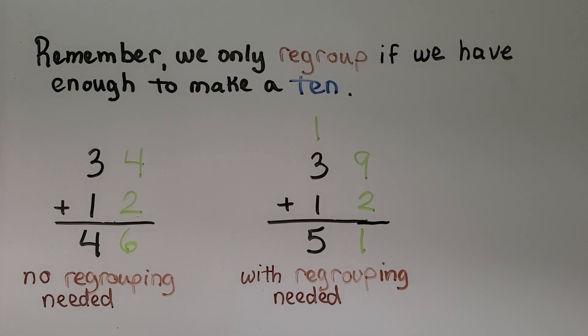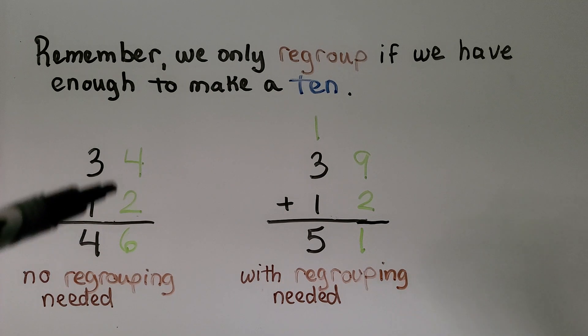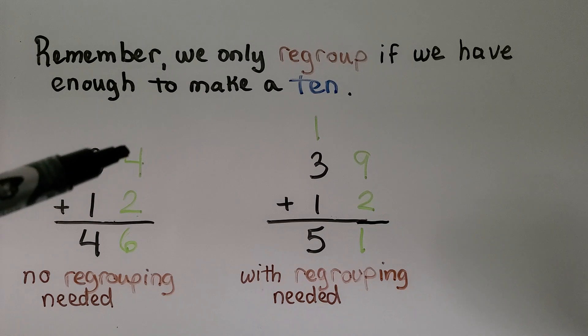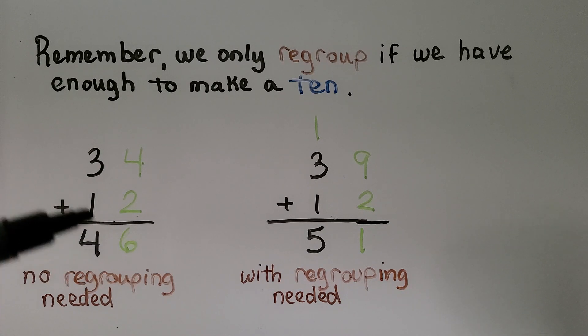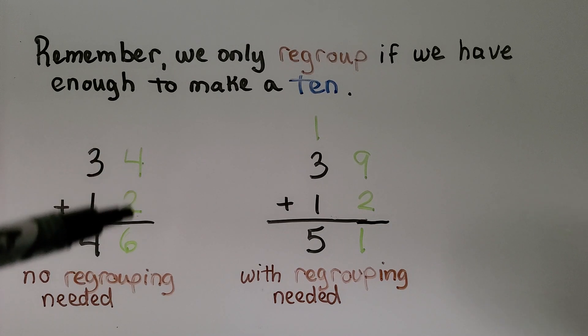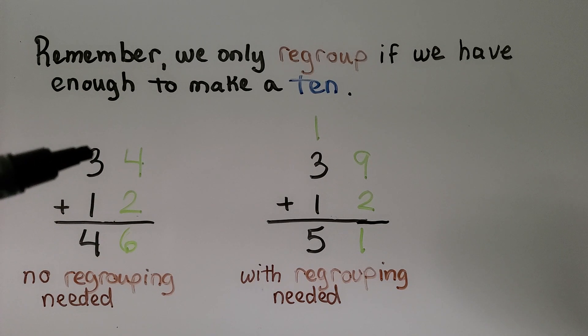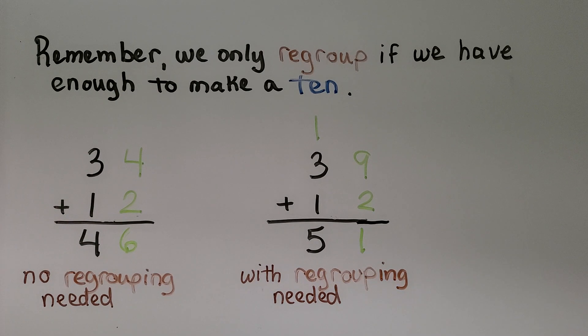Remember, we only regroup if we have enough to make a 10. For 34 plus 12, when we add the ones, 4 plus 2 is 6. That's not enough to regroup. We only have 6 ones. So we just add the tens. 3 plus 1 is 4. It's 46. So there was no regrouping needed.